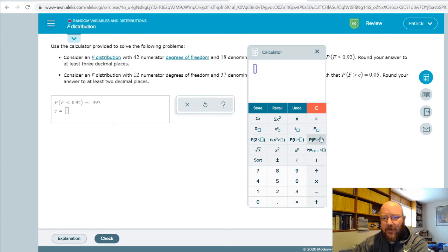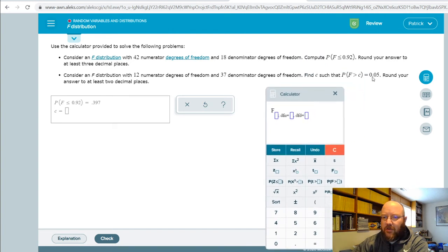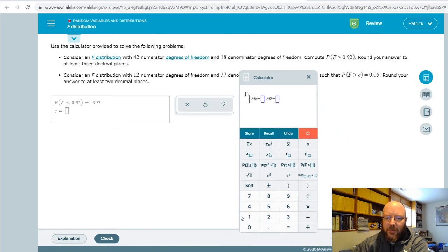And then the critical value, we're going to just use this button right here. And all you have to do, and since this one's always going to look up to the right of whatever the value is, the probability of f to the right, all you have to do is punch this one in directly. So 0.05 with 12 numerator and 37 denominator degrees of freedom.